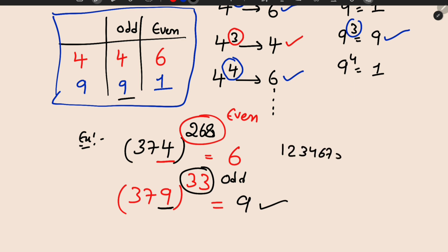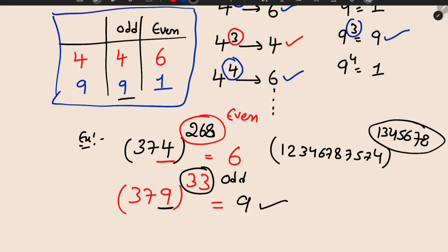Suppose a number like 1,2,3,4,6,7,8,7,5,7,4 to the power of something like 1,3,4,5,6,7,8. The last digit is 4 and the power ends in 8 which is even, so the unit digit is 6. It is fixed. Very easy. You can try to test your own unit digits. Notes in PDF will be in the description for download.